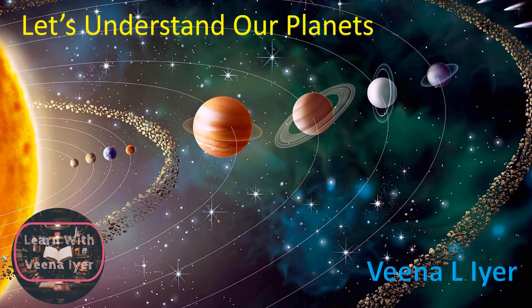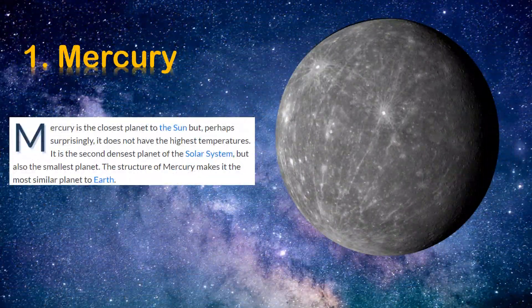Mercury is the closest planet to the sun, but perhaps surprisingly it does not have the highest temperatures. It is the second densest planet of the solar system but also the smallest planet. The structure of Mercury makes it the most similar planet to mother Earth.